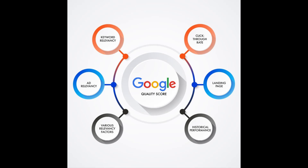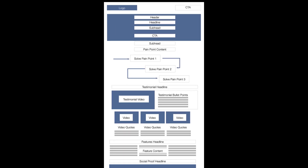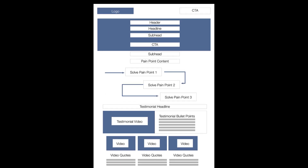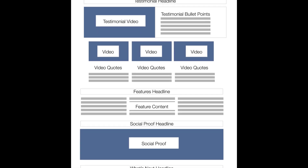Advertising platforms use a similar SEO algorithm to determine your quality score — an arbitrary score given to each page based on how it relates to the keyword. This helps advertising platforms keep irrelevant information off of certain searches. It also allows them to artificially inflate the price of a click. The code structure for paid landing pages is similar to SEO structure, with a few major differences.